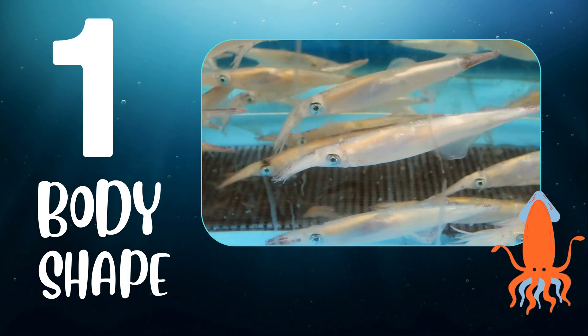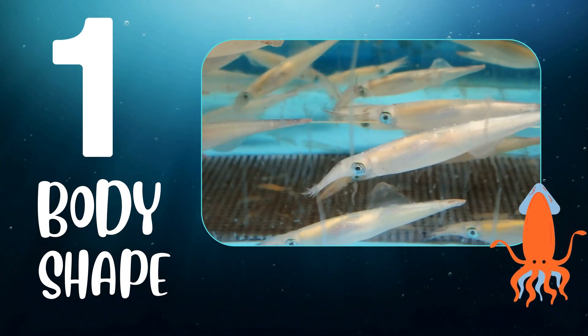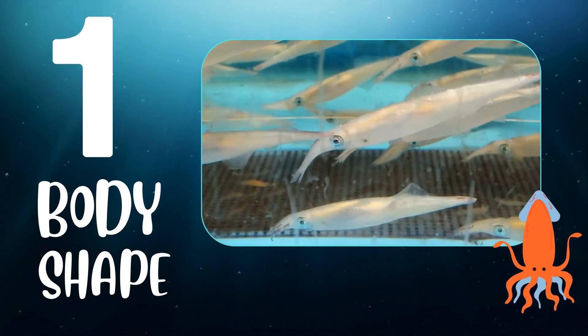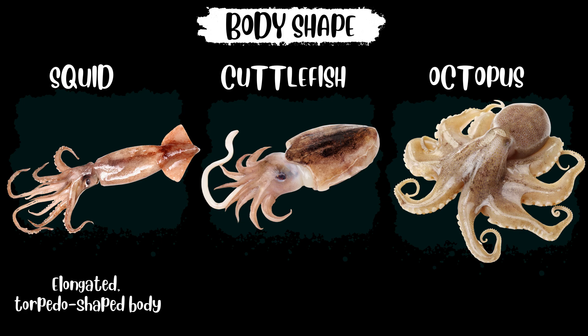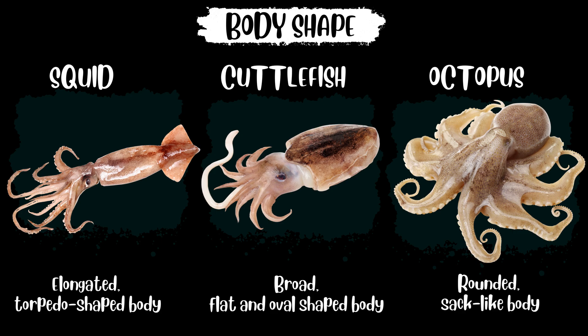Number one, body shape. Squid has an elongated, torpedo-shaped body. Cuttlefish has a broad, flat, and oval-shaped body. And octopus has a rounded, sack-like body.